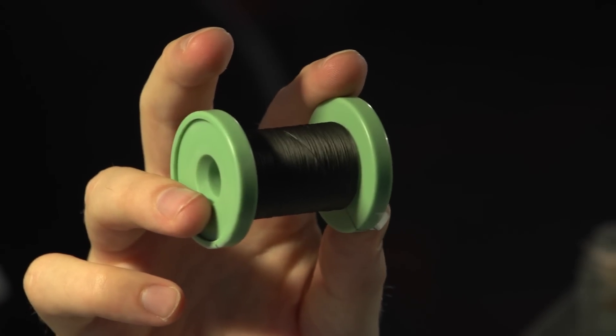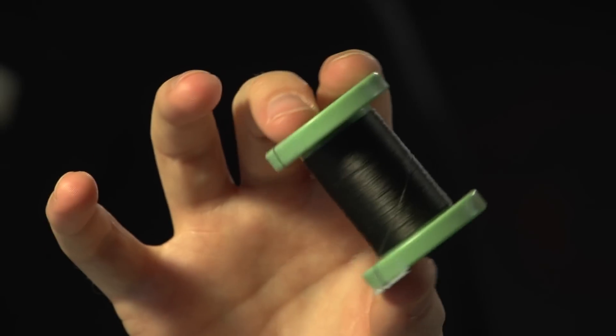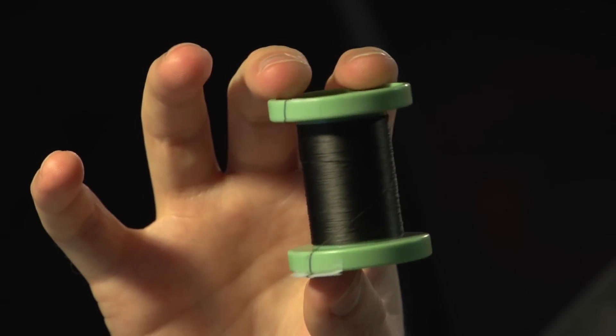This is a spool of the fiber after it's been spun and wound. This is one continuous filament. This was produced in a single spinning experiment where we spun a continuous filament and were able to wind it onto a spool like this.